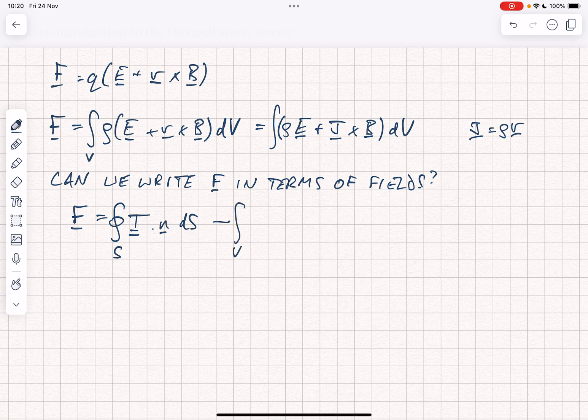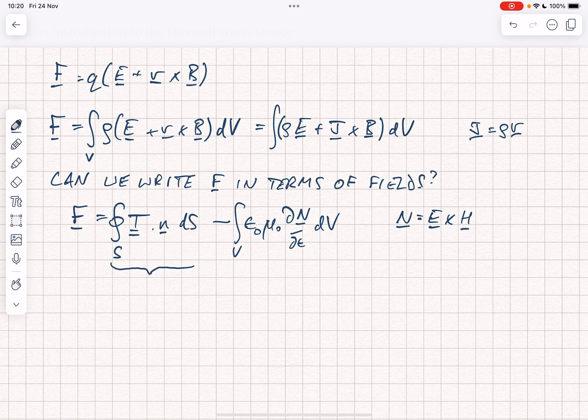Minus the volume integral of epsilon naught mu naught dN by dt, where N is the Poynting vector, N is equal to E cross H. And this first integral can, if you want to, also be written as a volume integral of the divergence of that stress tensor T, which allows you to think about this in terms of conservation laws, but we're not going to do that for now.